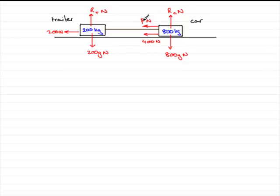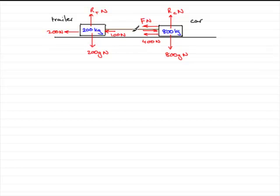We're also told that because we're braking, there's a thrust in the tow bar of 100 newtons. The thrust is a force that acts into each of the objects — the trailer and the car. So we've got 100 newtons pushing into the trailer, and equivalently 100 newtons pushing into the car.